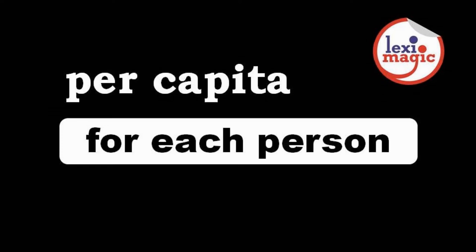Per capita means 'for each person.' For example, the per capita income is derived by dividing the total income generated by the population of that region.